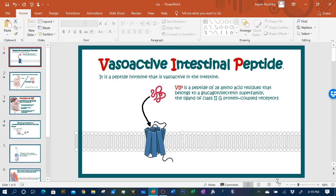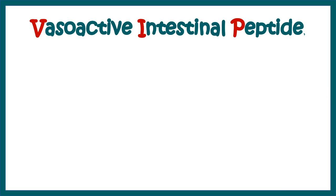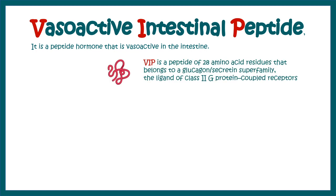In this video we'll talk about vasoactive intestinal peptide, a peptide hormone which is a local hormone found in the GI tract. It has vasoactive properties in the intestine. Chemically, vasoactive intestinal peptide is a 28 amino acid long polypeptide chain, very similar to glucagon or secretin, so it belongs to the glucagon/secretin superfamily.